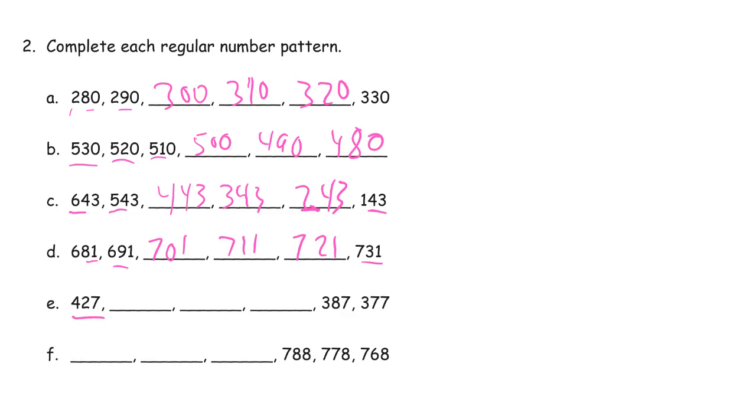427. Now we don't see what comes next here. We're going to have to go to the end to see what it's doing. It's getting smaller by 10 as we go. So it's decreasing by 10. 417, 407. And 397, 387, 377.